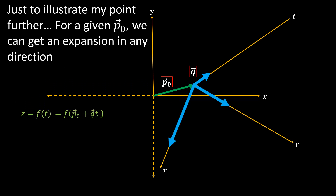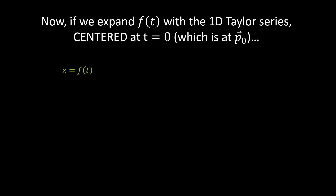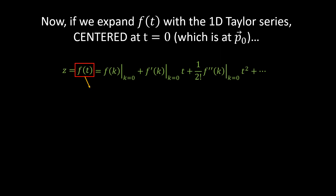For a given p₀ we can get any expansion in any direction, and this will be the Taylor series expansion in any direction given a p₀ and a q. Now let's expand f of t with the 1D Taylor series using the general formula. If we expand f of t centered at t equal to 0, or at p₀, then we have z equal to f of t equal to all those terms up to the second order. And f of t is actually equal to f of p₀ plus qt, like we had earlier.